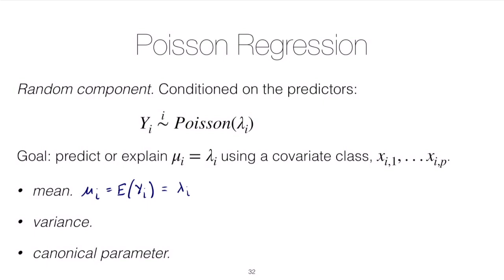The mean, which we might use as a prediction for the next observation, is the rate parameter λ. Also notice that the variance of a Poisson random variable, σi², equals λ as well — so the mean and variance are exactly equal. We'll later study the problem of overdispersion, which does not occur in standard normal linear regression but does occur in this model and in some cases in binomial regression.